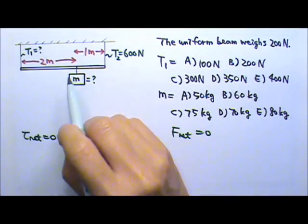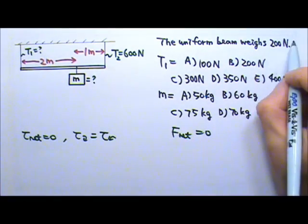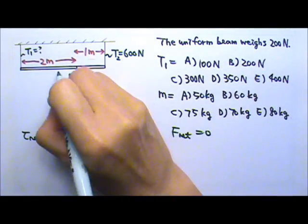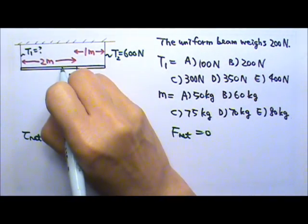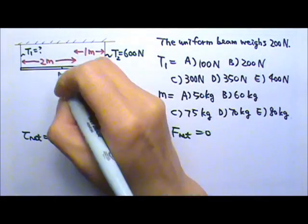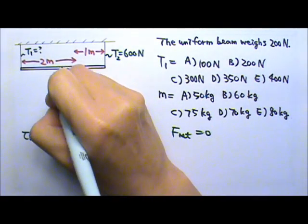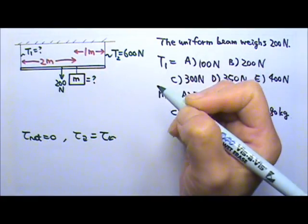For the beam, there are two MGs. One Mg is the beam which acts at the center of the beam because it is a uniform beam. So this is the 200N, the weight of the beam.